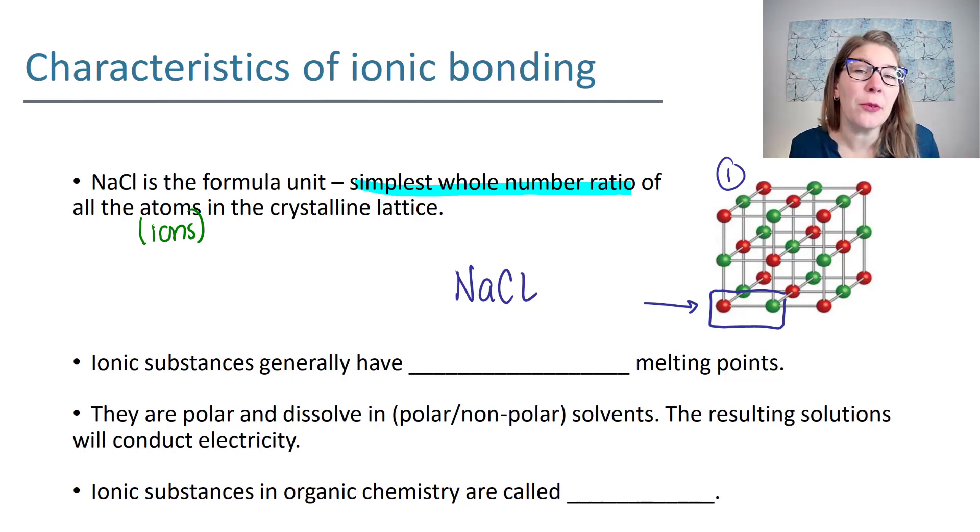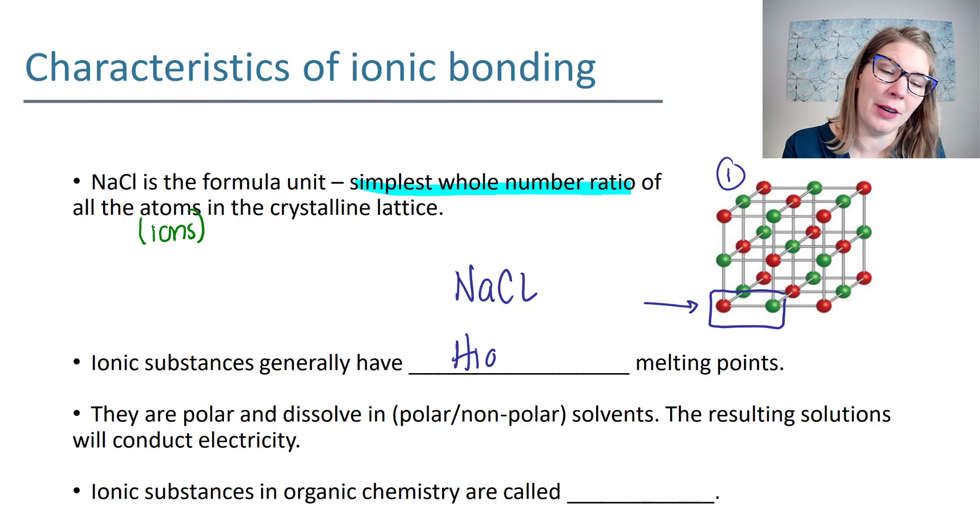In general ionic substances really have very high melting points. Imagine you're in your kitchen and you put salt in a pot on the stove, no water, just salt in the pot and you turn on your stove. That salt will not melt, not on your stove, because these ionic compounds have extraordinarily high melting points.